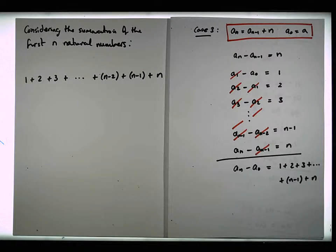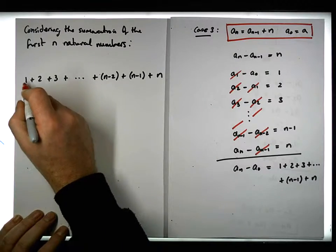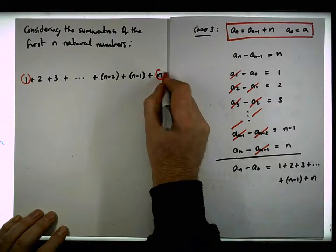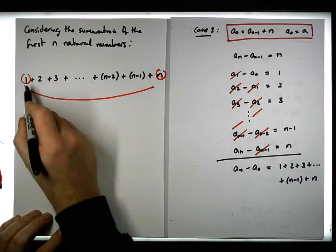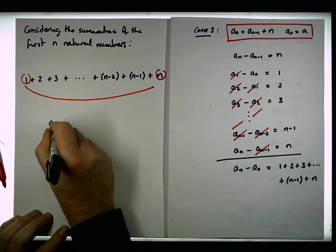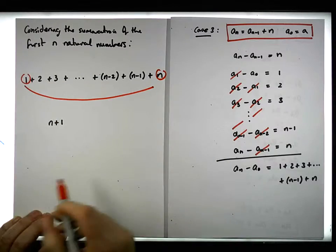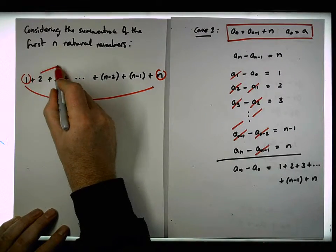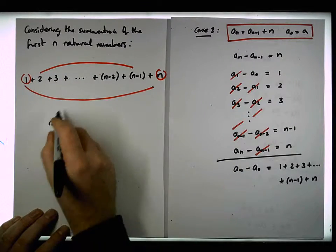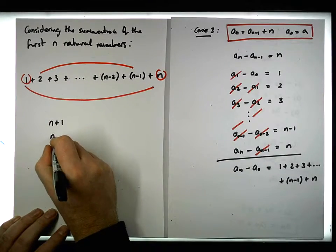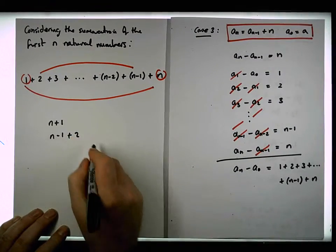And hopefully what we can see is that if we add the first number with the last number, so if we add these two together, well, what do we end up with? We end up with 1 plus n gives us n plus 1. If we add the second number with the second to last number, what do we end up with? We end up with n minus 1 plus 2, which is...